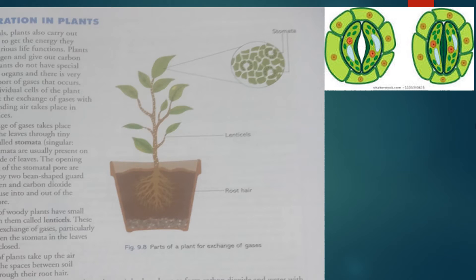The exchange of gases takes place mainly in the leaves through tiny openings we call stomata. Stomata are usually present on the underside of leaves. The opening and closing of the stomata pores are controlled by two bean-shaped guard cells.